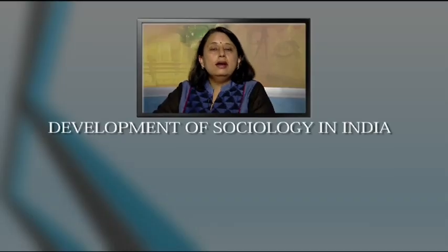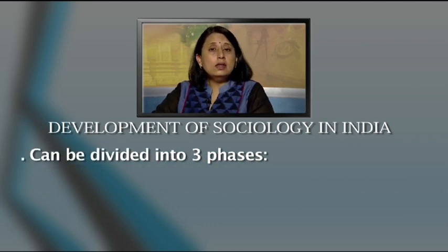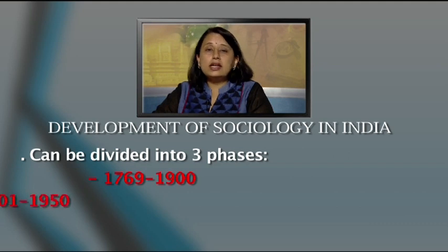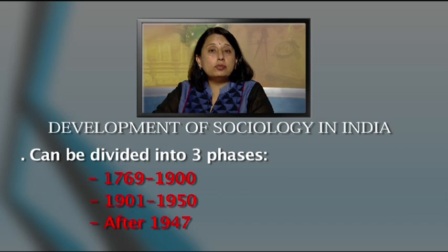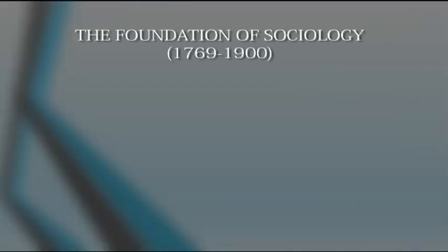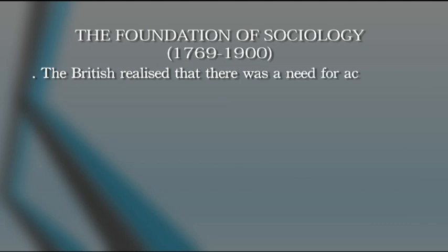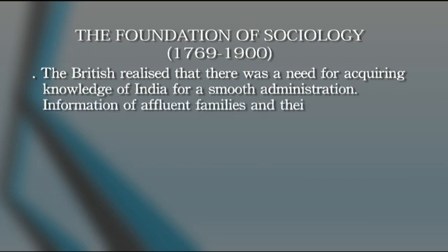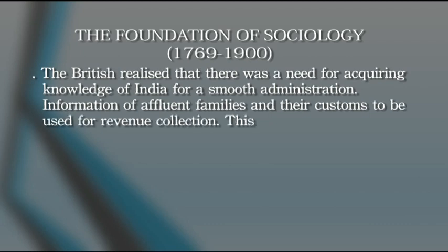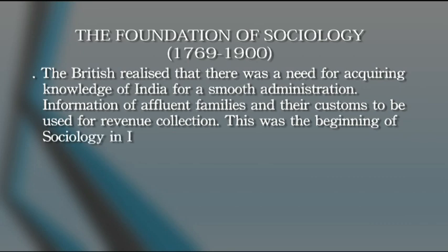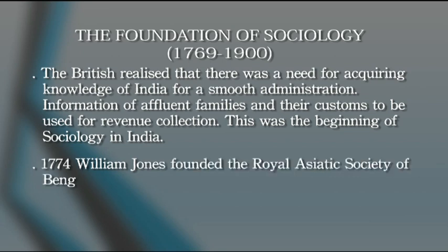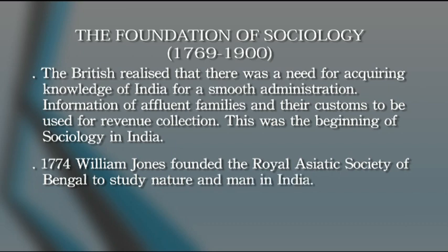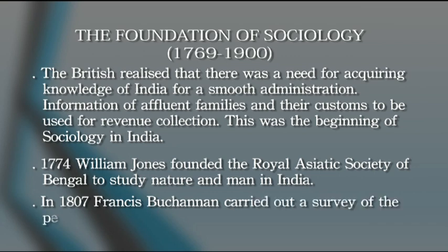The development of sociology in India can be divided into three phases: the first phase from 1769 to 1900, second from 1901 to 1950, and then post-1947 after independence. In the first phase, the British realized there was a need to acquire knowledge of India for smooth administration. A better understanding of society would lead to better governance. In 1774, William Jones founded the Royal Asiatic Society of Bengal to study nature and man in India.